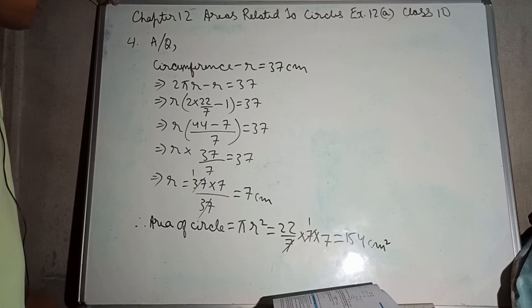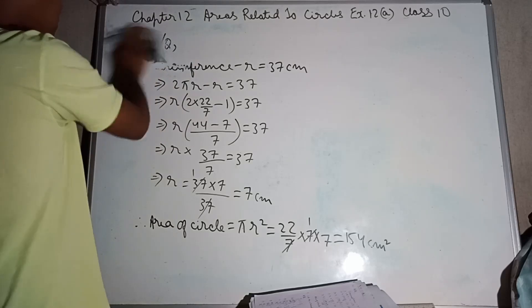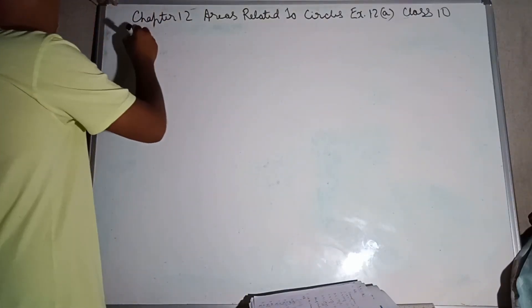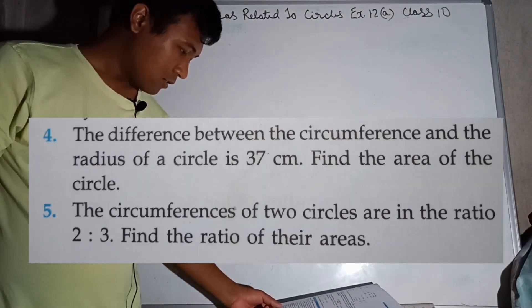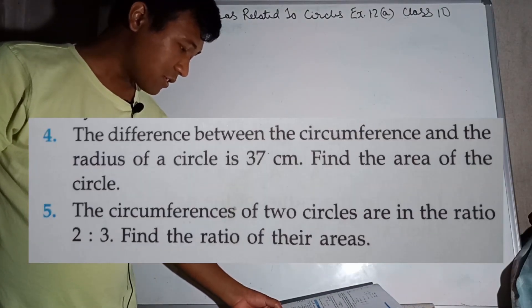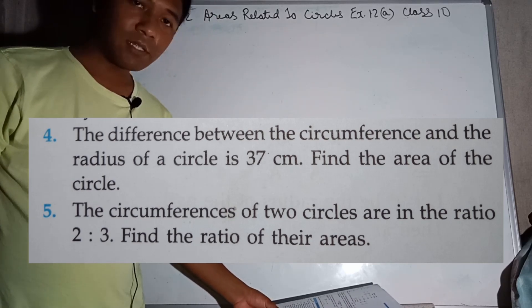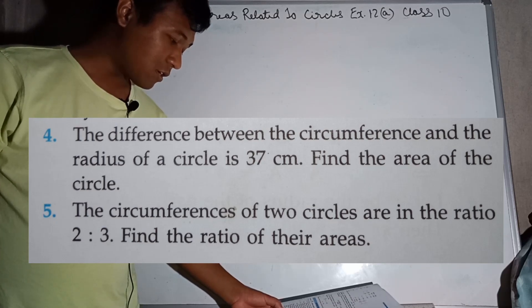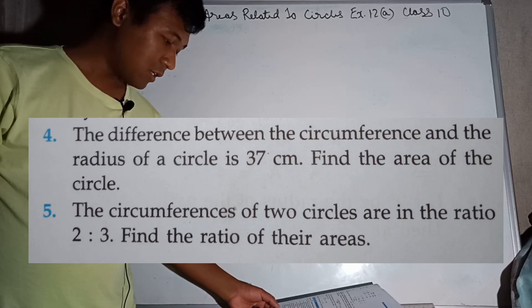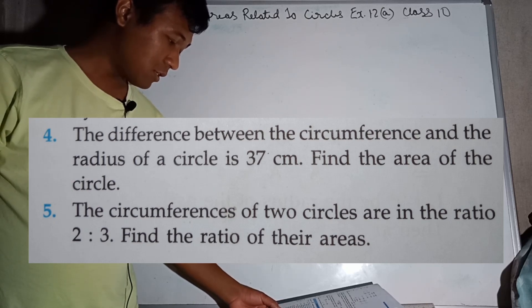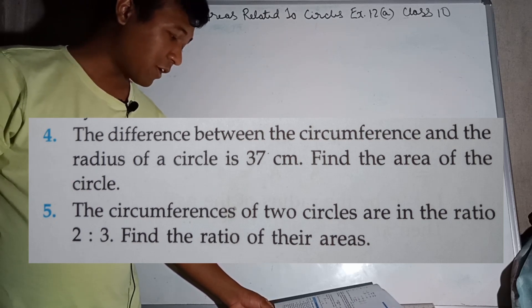Area of the circle is 154 cm². Question number 5: The circumferences of two circles are in the ratio 2:3. Find the ratio of their areas.